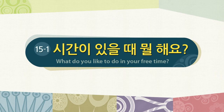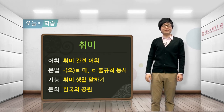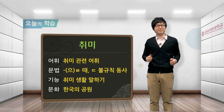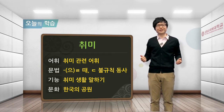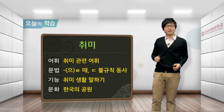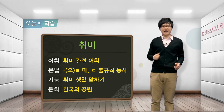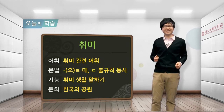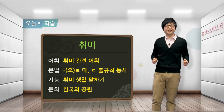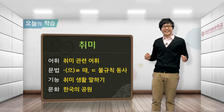시간이 있을 때 뭘 해요? Hello everyone, and welcome back to Quick Korean. Today we will be studying the section 시간이 있을 때 뭘 해요? — or what do you like to do in your free time. The topic of today's lesson is hobbies. We will learn vocabulary related to hobbies and the grammar points 을 때 and ㄷ irregular verbs. After studying this lesson, you will be able to talk about your hobbies in Korean. In the culture section, we will explore parks in Korea. Well then, let's get started.